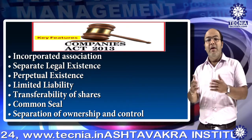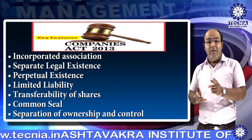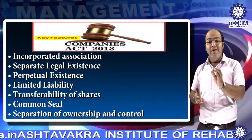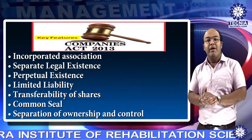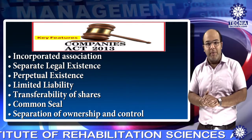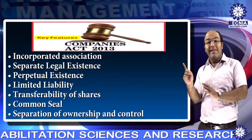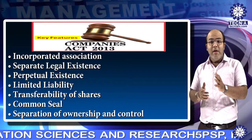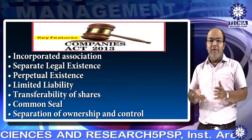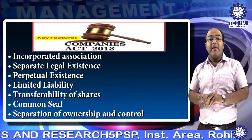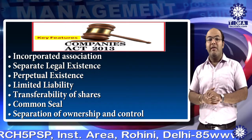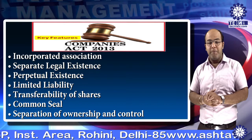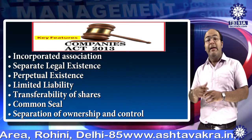Fifth, transferability of shares. Shares of a public company are easily transferable, but there are certain restrictions on the transfer of shares of a private company. Next, common seal — it is the official signature of a company, affixed on all important documents of the company.